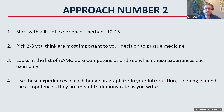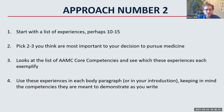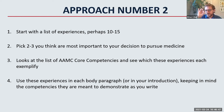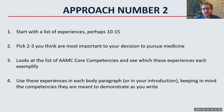Approach number two: start with a list of experiences — maybe looking at that list of 10 to 15 we already discussed. Pick the three you think are most important to pursuing medicine or that best demonstrate aptitude for medicine and show you'd be a great doctor. Take those experiences and match them up with the AAMC core competencies, seeing which experiences exemplify each. Then start writing — perhaps using one experience per body paragraph and making sure you're highlighting elements of those competencies in the way you reflect on the experiences you're sharing. Those are two possible approaches among many.